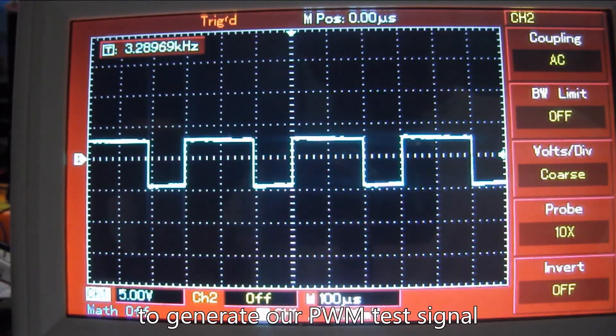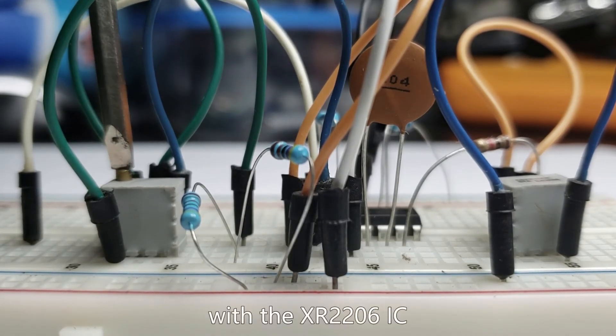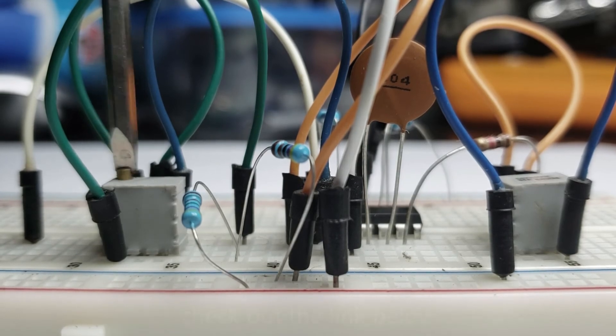To generate our PWM test signal, we will use a DIY function generator with the XR206 IC. If you want to know how this IC works, check out the link below.